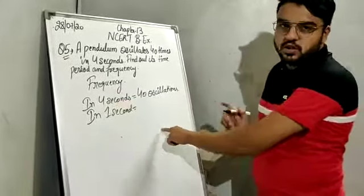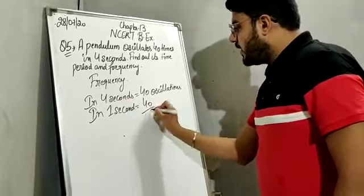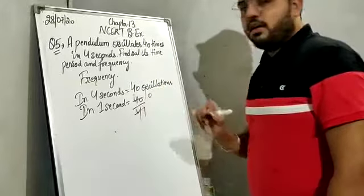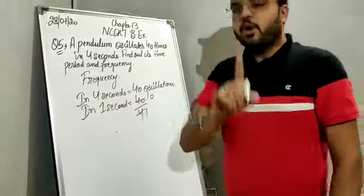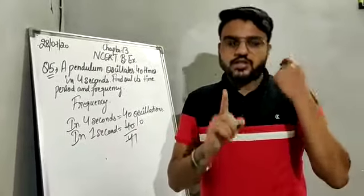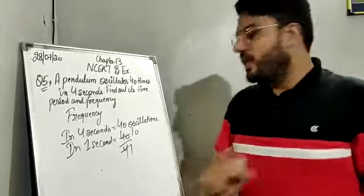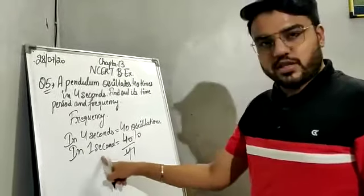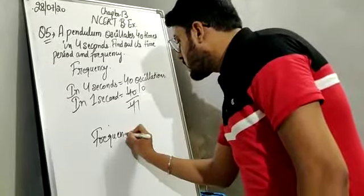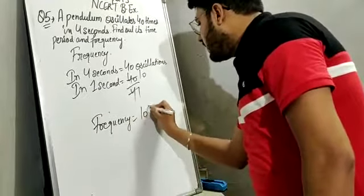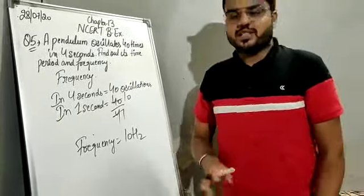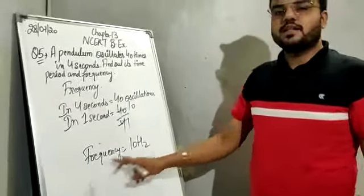In 1 second, the 4 will come in the division of 40, so it is 40 upon 4. Since 4 tens are 40, the number of oscillations in 1 second — which is the frequency — is 10. The SI unit of frequency is hertz, so the frequency is 10 hertz.